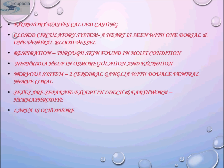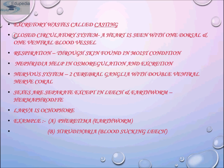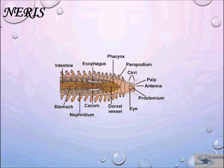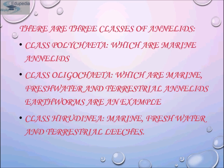Examples of Annelida include Pheretima (earthworm), Hirudo (blood sucker or leech), Nereis, and Aphrodite. There are three classes of Annelida: Class Polychaeta, which are marine annelids; Class Oligochaeta, which are marine, freshwater and terrestrial annelids — earthworms being an example; and Class Hirudinea, which are marine, freshwater and terrestrial leeches.